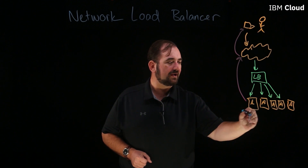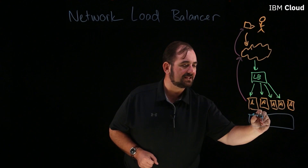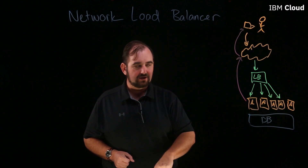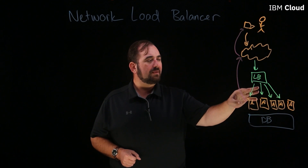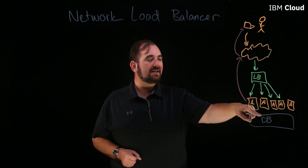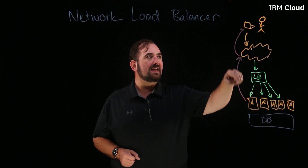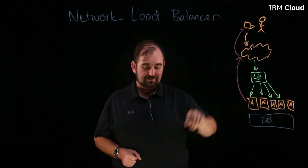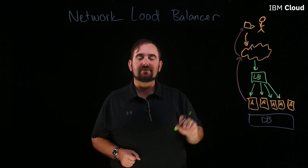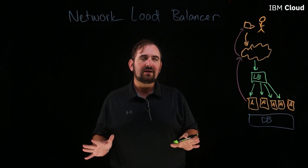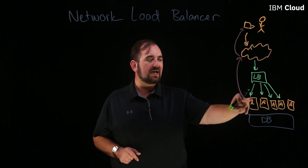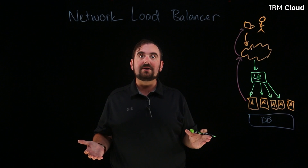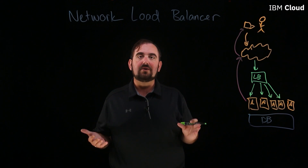The app servers then talk to a common database tier, because you don't want a split-brain scenario with your database. They get the data they need and serve it back to the end customer directly. That's how you split up and serve the data. Now, since we're talking about load balancers — it's going to decide which application server gets the traffic — how does it actually decide what to do?